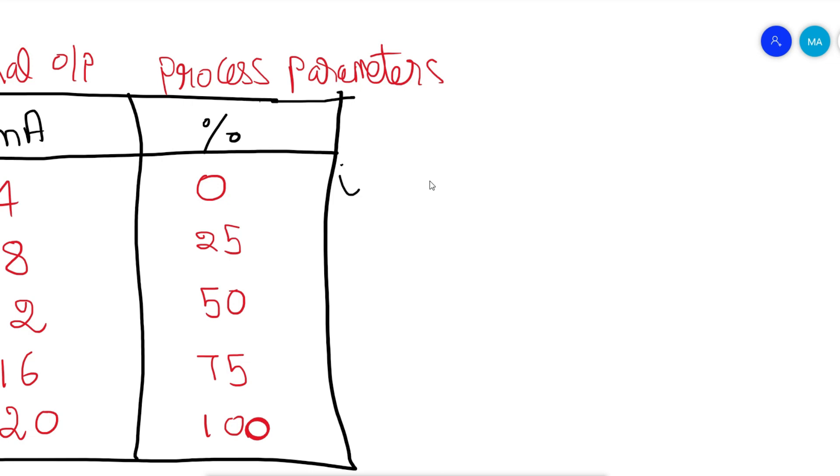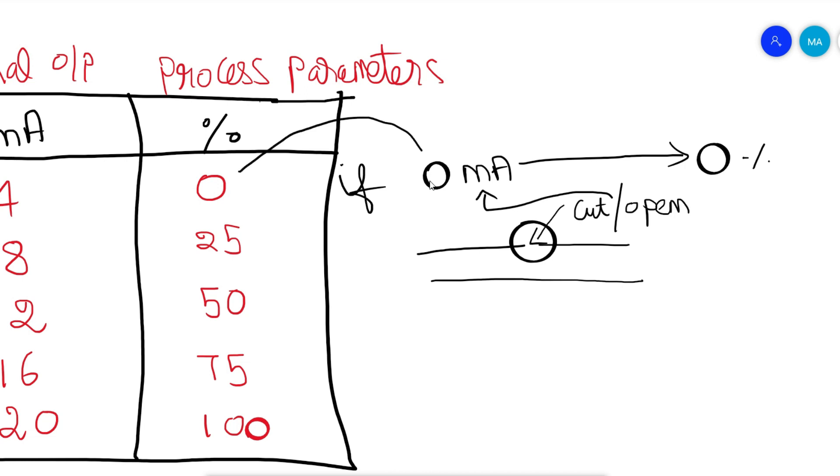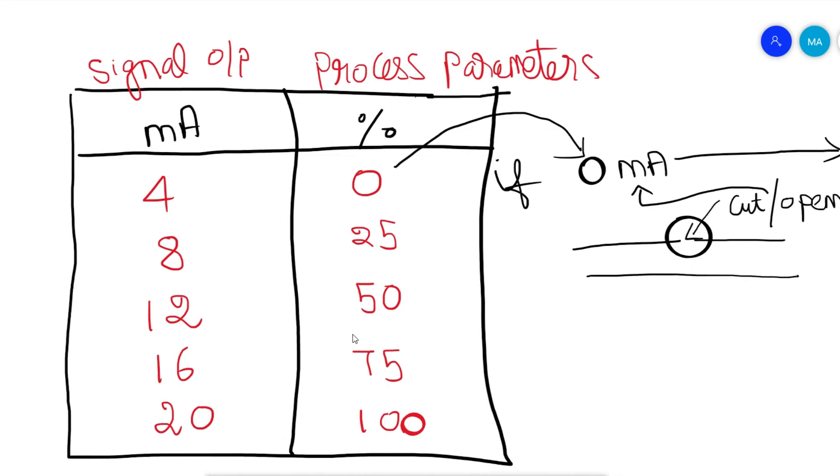You could easily find that if an instrument signal shows zero milliamps, it means there is no power supply in the instrument signal cable. There might be a possible signal cut or cable open. If we are using zero milliamps for zero percentage, it would misguide us to show that there is a zero percentage process parameter.